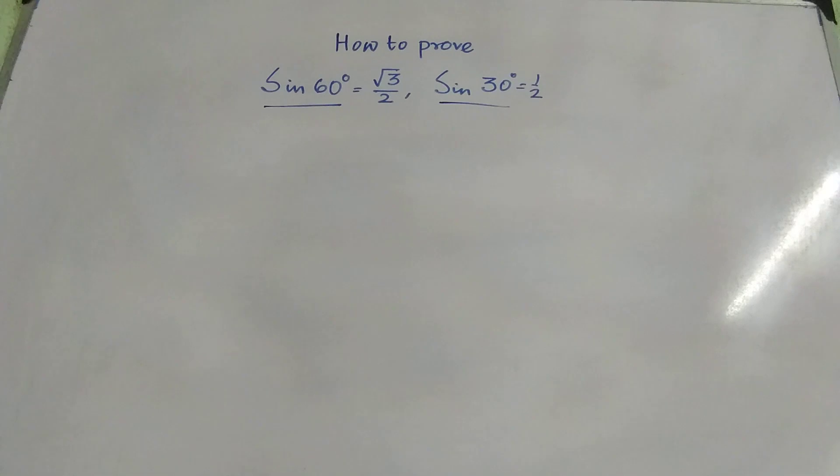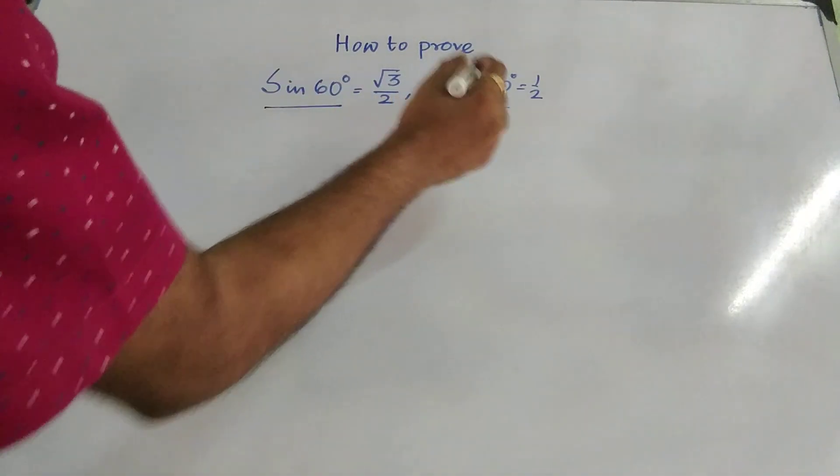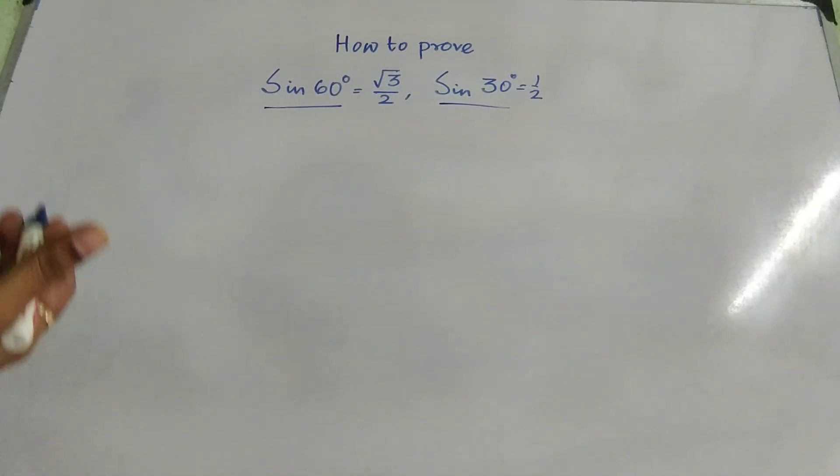Today I will show you through an example how this formula is getting derived. Sin 60 and sin 30 and same can be applied for cos, cot, tan, whatever.